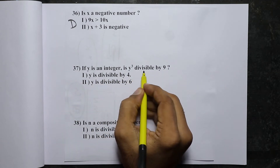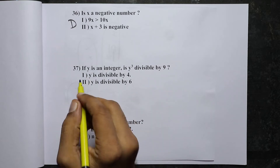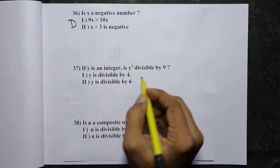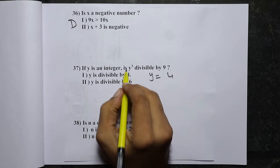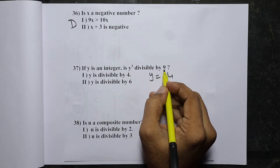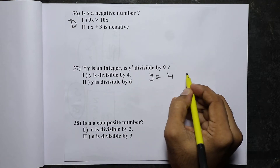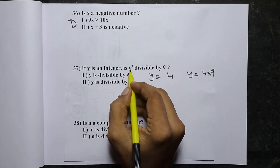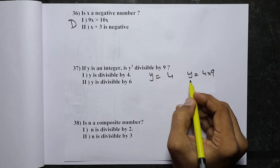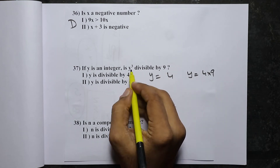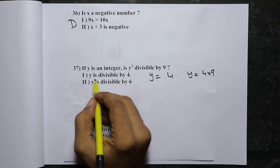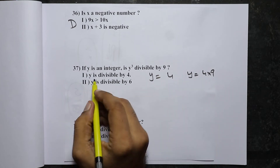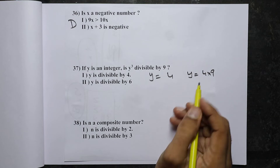If y is an integer, is y cubed divisible by 9? The first statement says y is divisible by 4. Consider y = 4: y cubed will not be divisible by 9. Now consider y = 36 (which is 4 × 9): y cubed will be divisible by 9. So if y is divisible by 4, y cubed may or may not be divisible by 9. First statement alone will not give you a definitive answer.